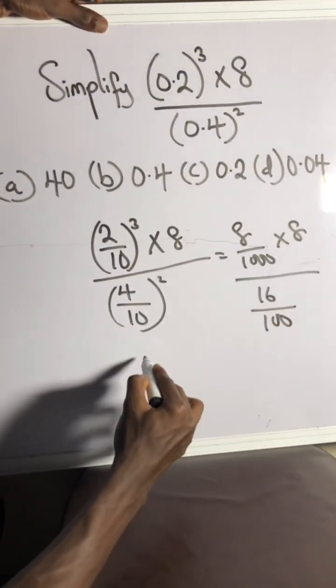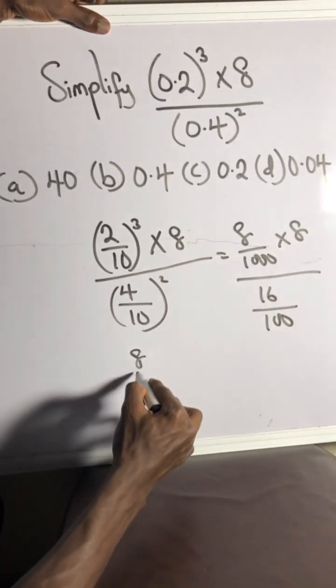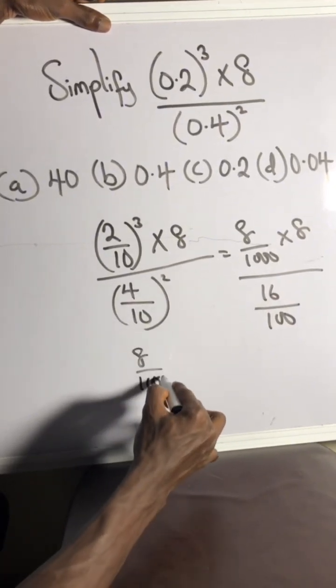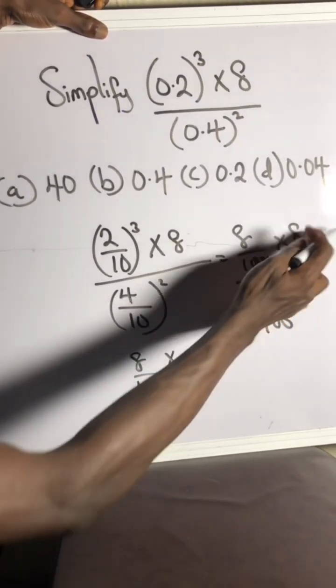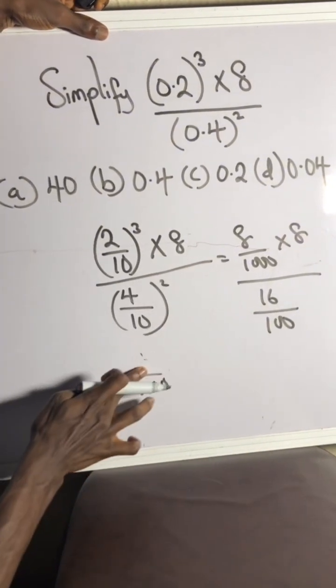All you gotta do is write 8, okay, over 1000 times, you know, 8 times 8 is actually 64. Just write it here.